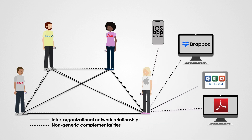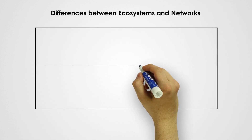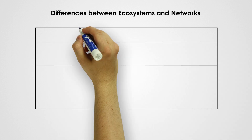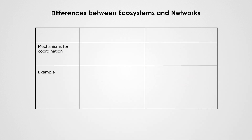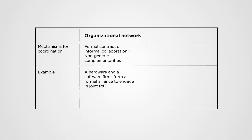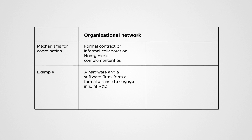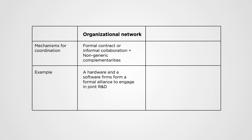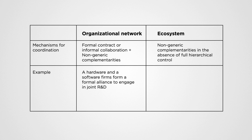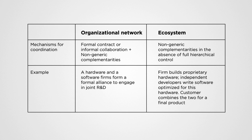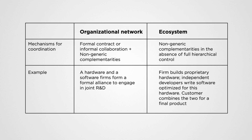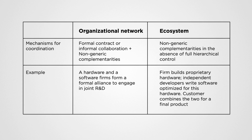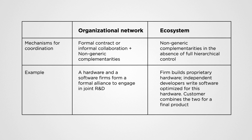Complementarities and networks can be represented by maps. Both networks and ecosystems depict how organisations manage dependencies. Networks are formal and enduring inter-organisational relationships that are strategically significant for their members. Ecosystems comprise a set of actors with varying degrees of multilateral, non-generic complementarities that are not fully hierarchically controlled.